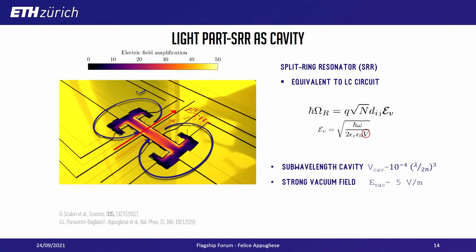The cavity we chose is a complementary split-ring resonator — a patterned sheet of gold where, when we apply a terahertz field, we have localization of the field inside the gap. Current plays the same role as inductors, and this part acts as a capacitor — so it's equivalent to an LC circuit. The advantage is that the amplitude of the vacuum field scales as the square root of 1 over the volume of the cavity. With these specific cavities, we can have very sub-wavelength cavity volumes — confining light on a scale 10^-4 of the equivalent Fabry-Pérot cavity at that wavelength — producing vacuum fields hundreds of times higher than a Fabry-Pérot cavity.